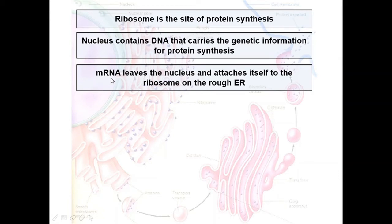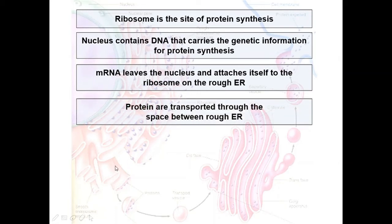Then what happens next? The messenger RNA then leaves the nucleus through the nuclear pores and attaches itself to the ribosome on the rough endoplasmic reticulum. The proteins synthesized by the ribosome are then transported in the rough endoplasmic reticulum.